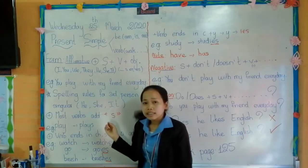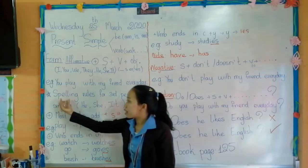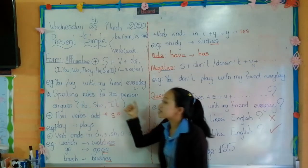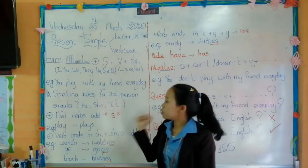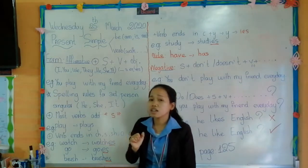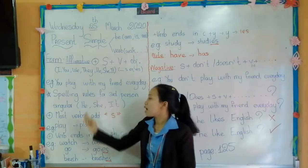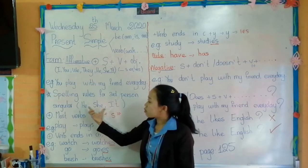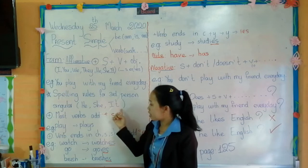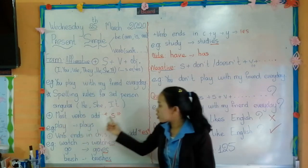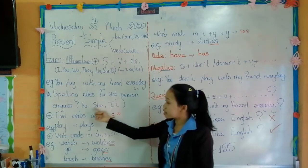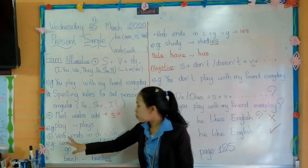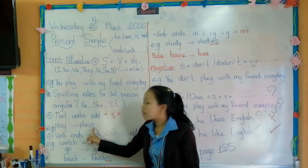So first, I would like to introduce the spelling rules for the third person singular. Do you remember? We have three: he, she, and it. So when you use he, she, and it, most of the time you have to add S. For example, play changes to plays.